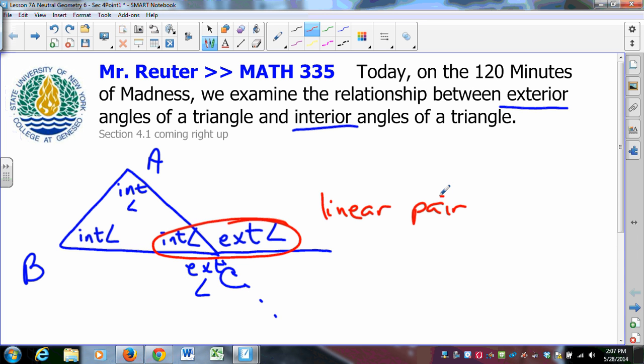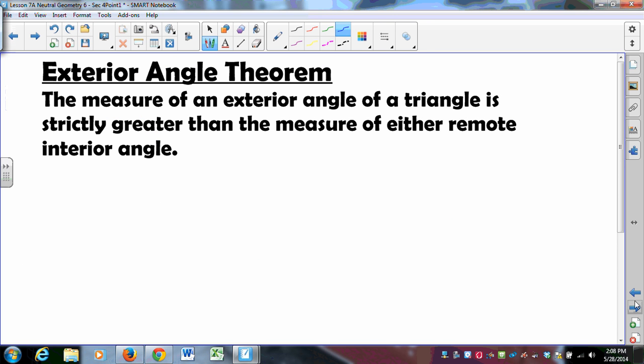If we do that, if we get the linear pair and the exterior angle on the outside there, what it means is that these other two interior angles are what we call remote interior angles. Interior because they're inside the triangle, remote because they are far away from the exterior angle of interest. So, there's a theorem that relates those angle measures, and it goes something like this.